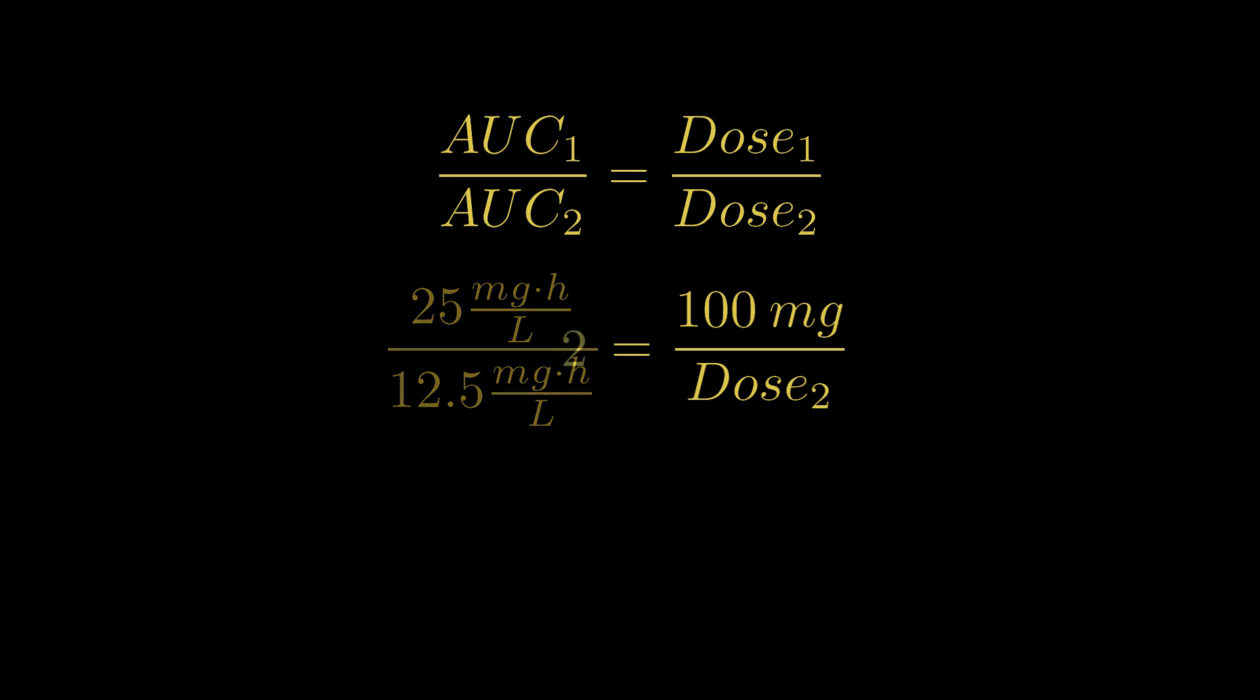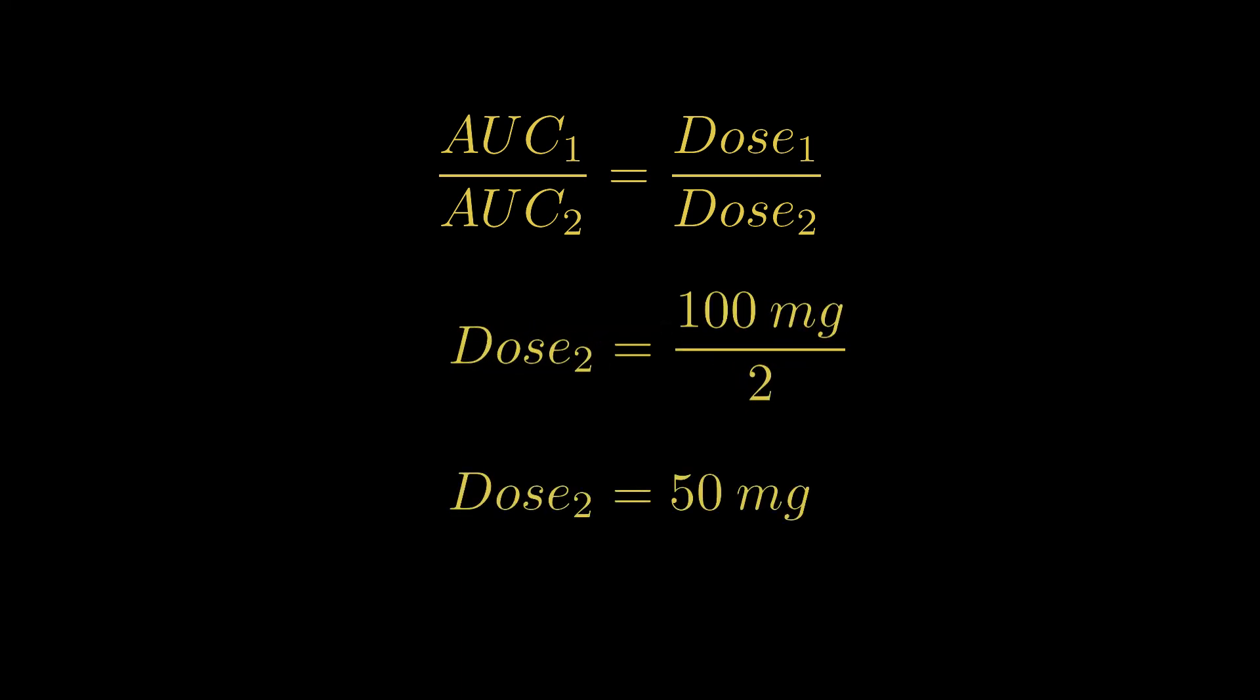Now we solve for dose 2 and get 50 mg of megamania, which would result in a therapeutic target AUC of 12.5 mg hour per liter. Thank you for listening.